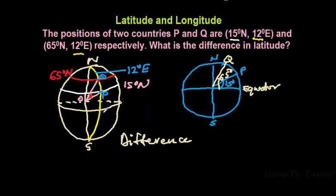So the difference is just the difference. This is the angle we're talking of, which is simply 65 degrees minus 15 degrees. So that is the difference. 65 degrees minus 15 degrees, and that will give us 50 degrees north. So that's the difference in latitude.